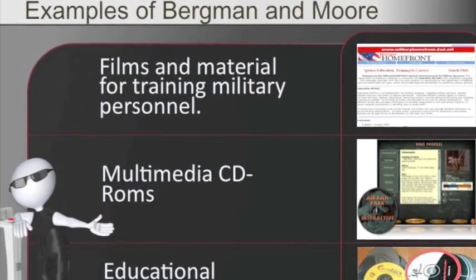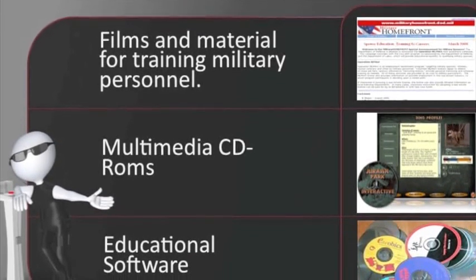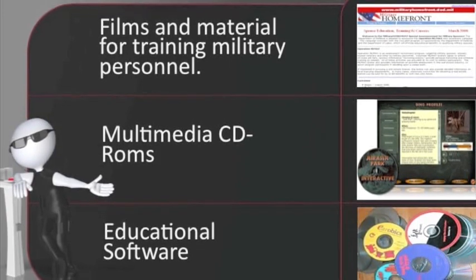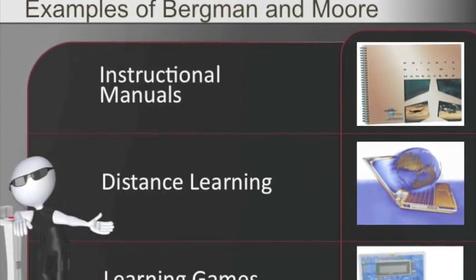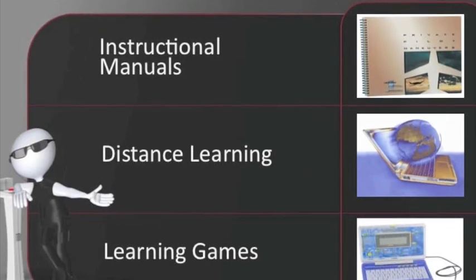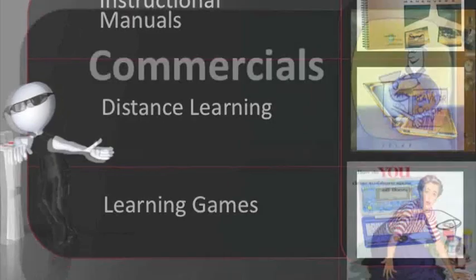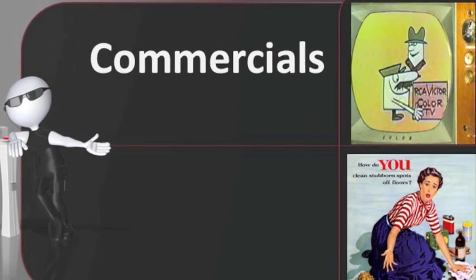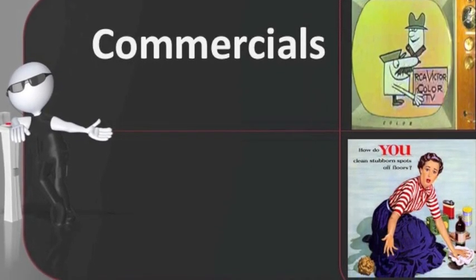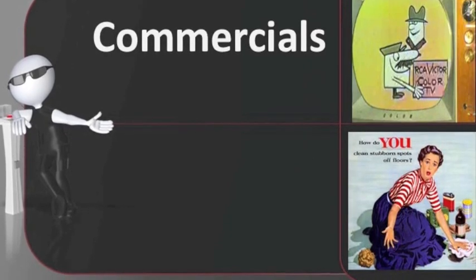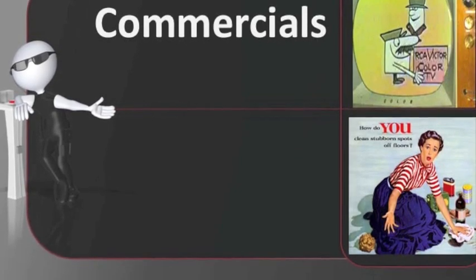Other examples of instructional design products that the Bergman and Moore model would typically be used for include films and materials for rapid training of military personnel, multimedia videos, CD-ROMs as standalone educational software, instructional manuals, materials produced for open, flexible, or distance learning, different types of tutorial videos, instructional learning games, and commercials. Pretty much any multimedia video product could use the Bergman and Moore model to develop it.